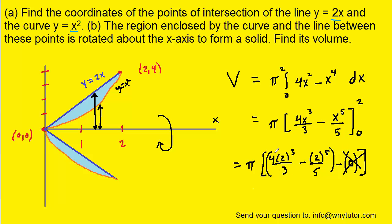We can then just use some arithmetic to clean this up. When we do that, we get 64π over 15. So this becomes the correct answer.